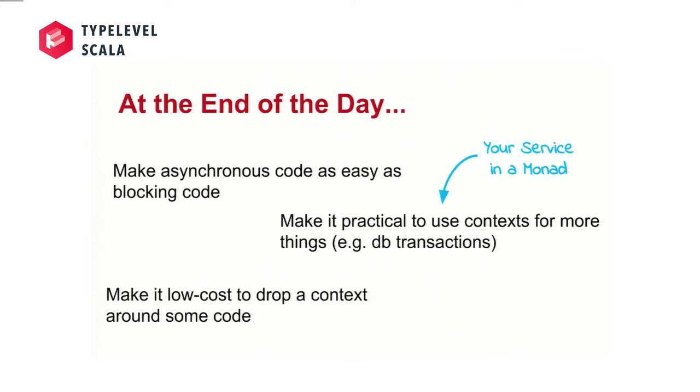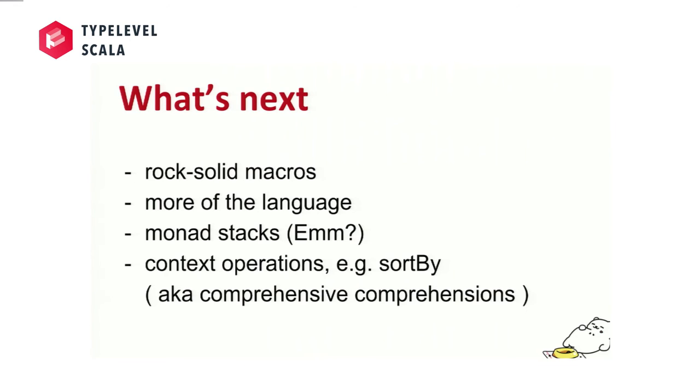Yeah. So at the end of the day, what is it that we actually want to do? Like, the work that we're doing is basically designed to take blocking code and turn it into non-blocking code, which basically means making it as easy to write non-blocking code as blocking code, making it practical to use contexts wherever it makes sense. So, like, things like Doobie should, like, make a tremendous amount of sense for managing database transactions. Like, there should be no practical barrier to working like that.